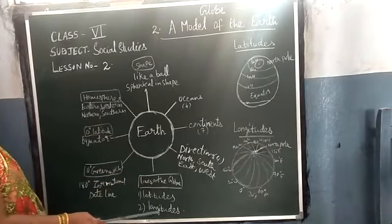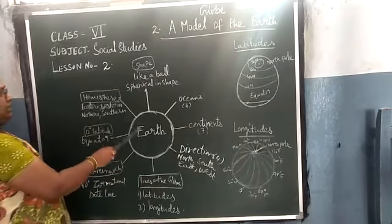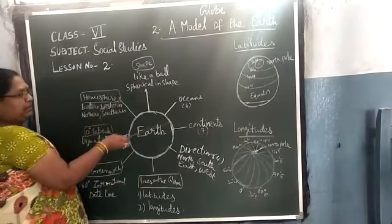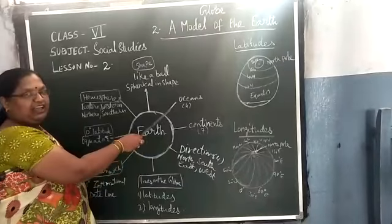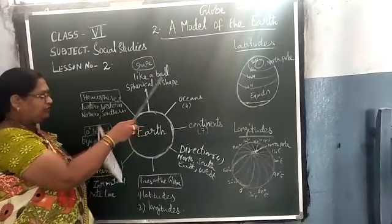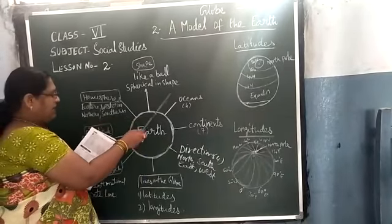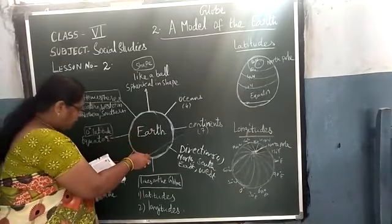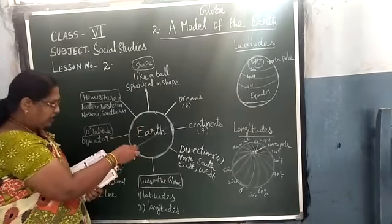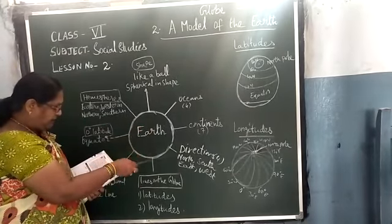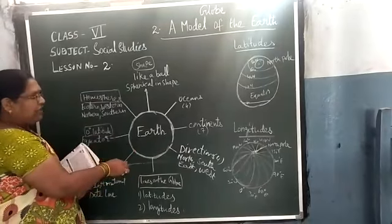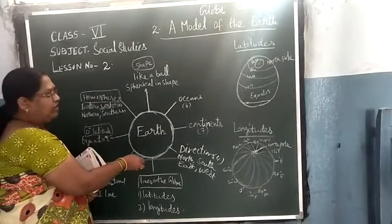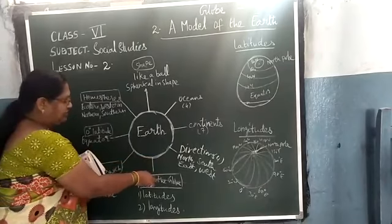So first you have to know about the Earth. Earth is like a sphere. There are 4 oceans: Pacific, Atlantic, Indian, Arctic. There are 7 continents: Asia, Africa, Europe, Australia, North America, South America, and Antarctica. The 4 cardinal directions are: North, South, East, West.